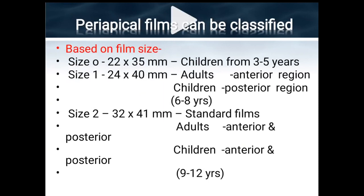Periapical films are classified by size: size 0 (22×35 mm) for children aged 3–5 with deciduous teeth; size 1 (24×40 mm) for adult anterior region and children's posterior region; and size 2 (32×41 mm), the standard film, for adults anterior and posterior and for children aged 9–12.